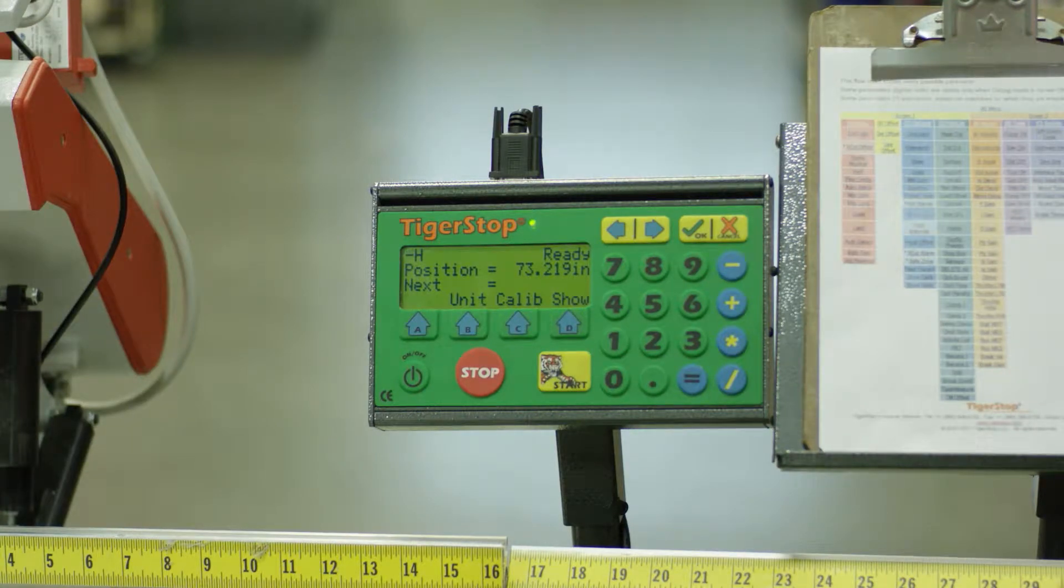TigerStop frequently introduces new product features. Some of these would be, for example, Dynamic Pack Optimizing, Tablet Package, Barcode Scanning, among others. To use these new product features may require you to upgrade your software within your TigerStop.